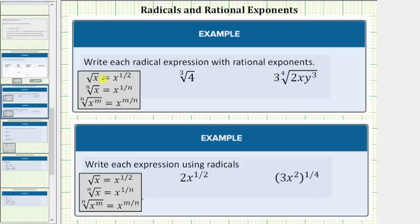In this first example, we're asked to write each radical expression using rational exponents. Looking at the notes, we're given the square root of x equals x to the one-half, and the nth root of x equals x raised to the power of one over n. In general, the nth root of x raised to the power of m equals x raised to the power of m divided by n. Notice how the denominator is the index in radical form, and the numerator is the exponent on the radicand.